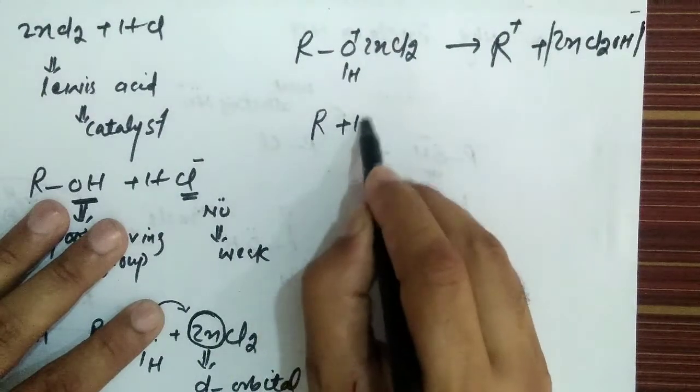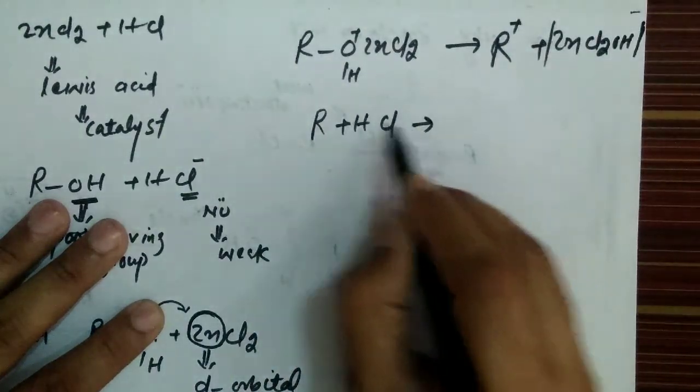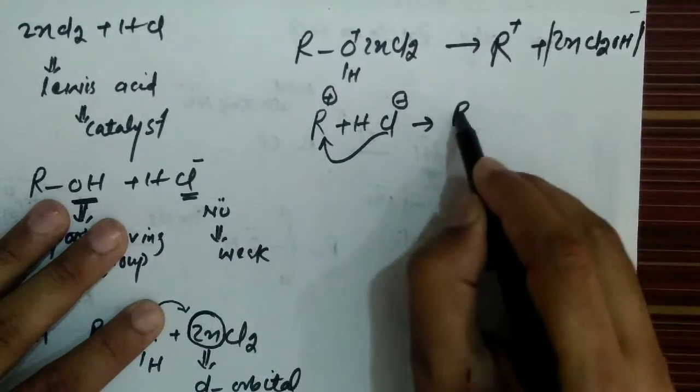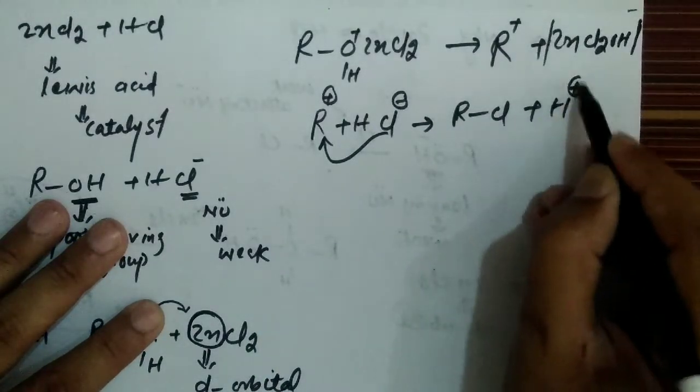Now, we have HCl positive so negative. I take here R bond Cl plus H positive. So, this was the first step, this was the first step which starts from here.